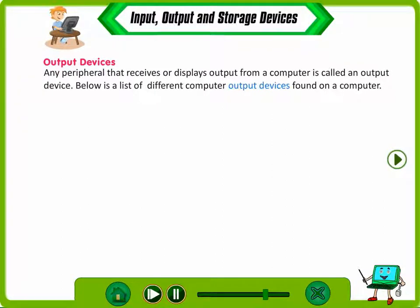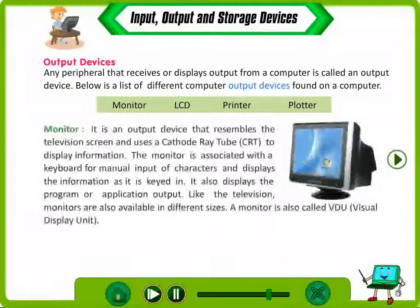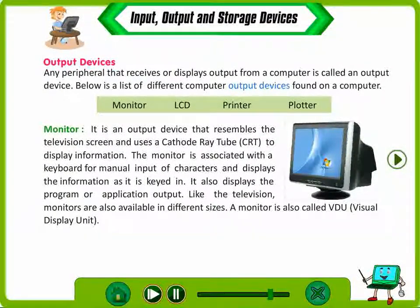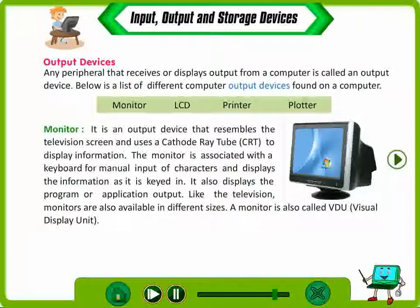Any peripheral that receives or displays output from a computer is called an output device. Output devices found on a computer include monitor, LCD, printer, and plotter. A monitor is an output device that resembles a television screen and uses a cathode ray tube to display information. The monitor is associated with a keyboard for manual input of characters and displays the information as it is keyed in. It also displays the program or application output. Like the television, monitors are available in different sizes. A monitor is also called a VDU.